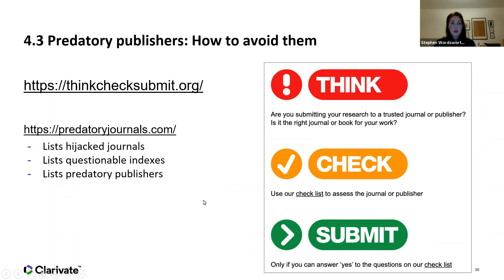Another good website is thinkchecksubmit.org, which has really good checklists and guidelines if you're worried whether a journal might be predatory. They also have a version for conferences, since there are predatory publisher conferences out there now as well. There's also predatoryjournals.com, which lists all currently known predatory publishers, hijacked journals, and also questionable indexes — since many predatory publishers make up their own fake indexes.